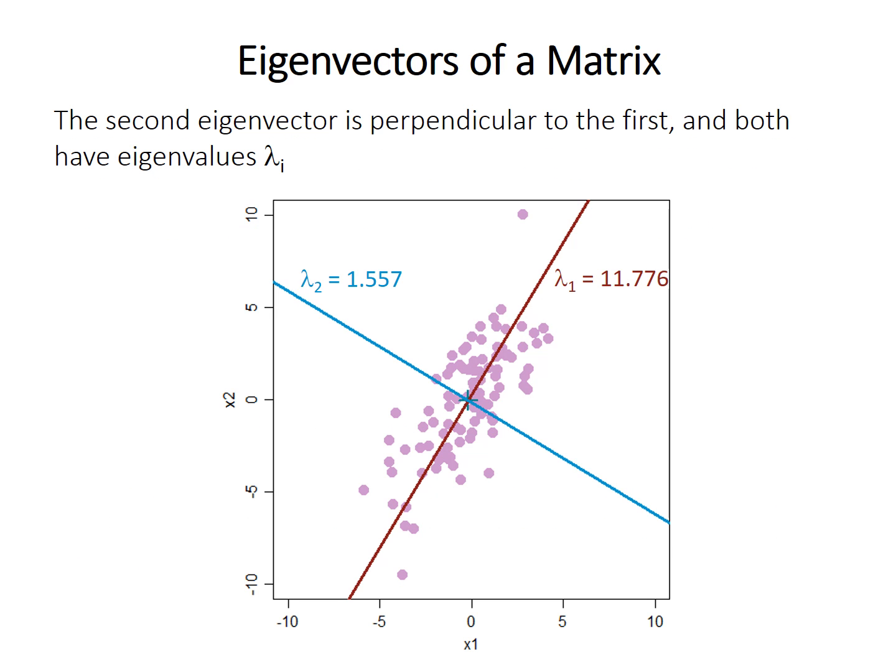Going back to our graph, I showed the first eigenvector before, and now the second eigenvector is shown as the blue line. Each has an eigenvalue. Note that the first eigenvalue, λ₁, is much bigger at 11.776, compared to the second at 1.557. You probably also notice that the data are spread out much more along the dark red line for the first eigenvector, and not spread out very much along the blue line for the second eigenvector.